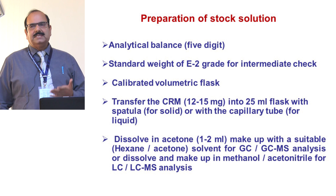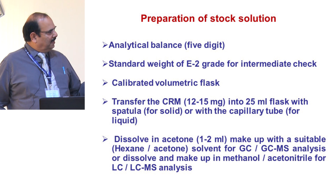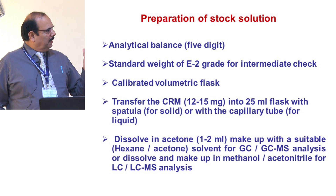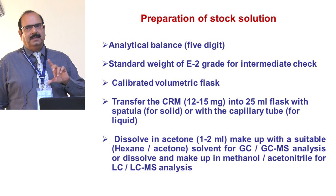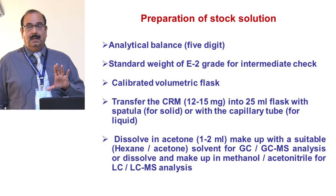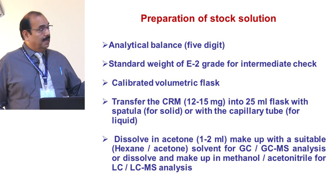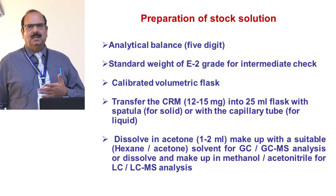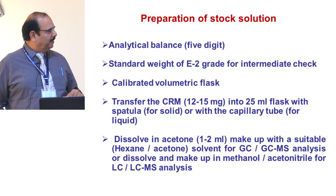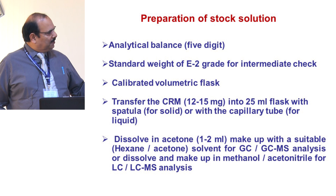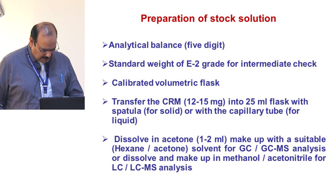If the pesticide is going to LC, dissolve in methanol or acetonitrile. The advantage of hexane-acetone over pure hexane is that pure hexane may initially dissolve the compound but sometimes gives turbidity during makeup to 25 mL. To avoid turbidity, we use hexane-acetone for GC/GC-MS. This is not listed anywhere formally — it is from our 30 years of experience, which is why I am sharing it.